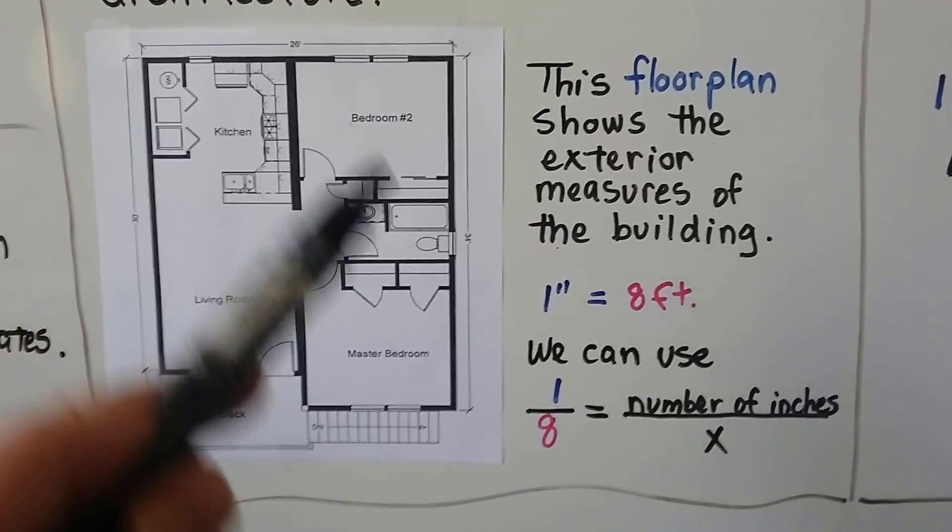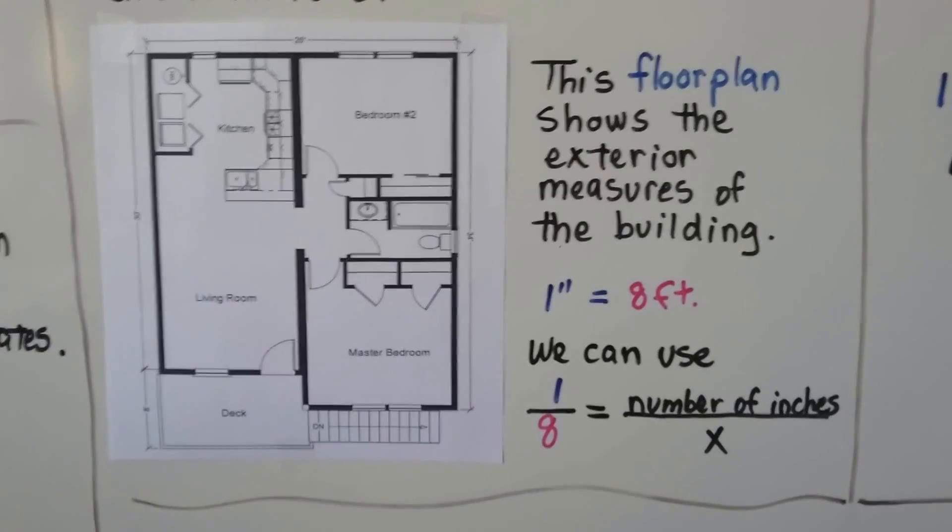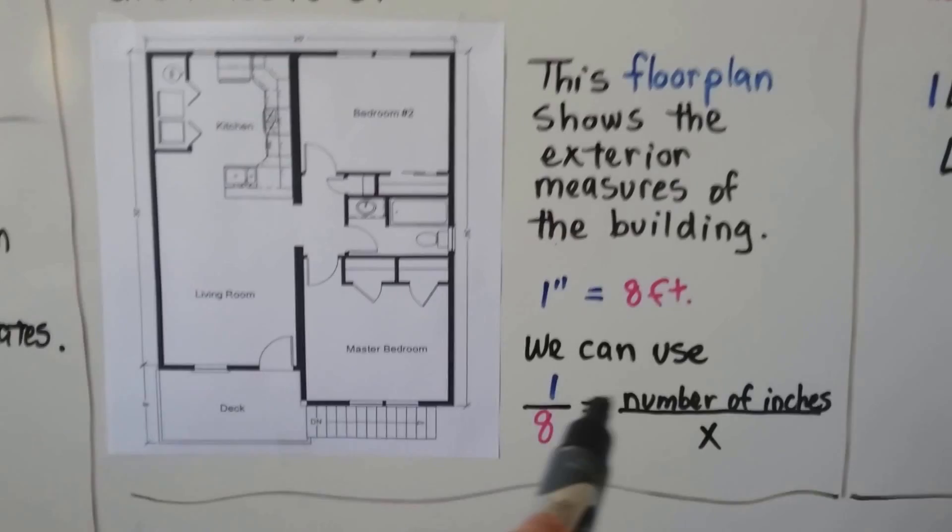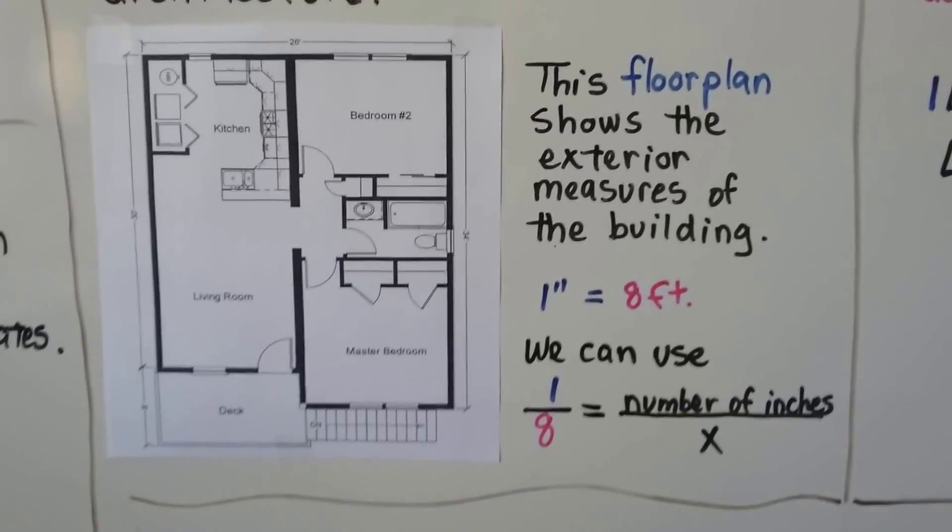So, we could find the measures of the room, of any of these rooms, by using the one inch equals eight feet. Our fraction is one eighth, and it's going to equal the number of inches over the actual measure.